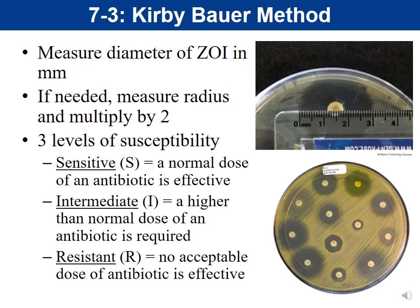For the Kirby-Bauer readout, measure the zone of inhibition from the clear edge to the clear edge — the full diameter. Be careful: if a ruler starts at a number other than zero, account for that. Record measurements in millimeters. One centimeter equals 10 millimeters, so if the zone spans from 0 to 3 cm on the ruler, you record 30 millimeters.